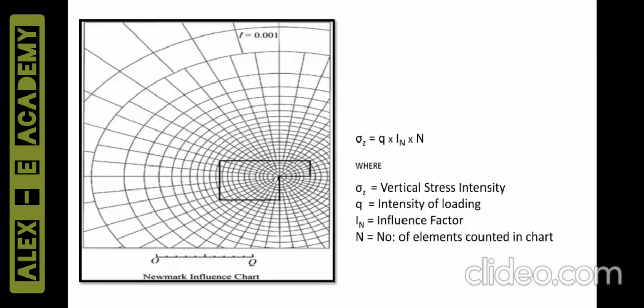The final equation to remember is σ_z = q × I_n × N. We know q and I_n as discussed previously. N is the number of elements counted in the chart. We can draw any shape inside the concentric circles and radiating lines. The point at which we want to find the stress must be kept at the center of the Newmark's chart. With that point at center, we draw the structure to scale and count the number of elements inside that area.